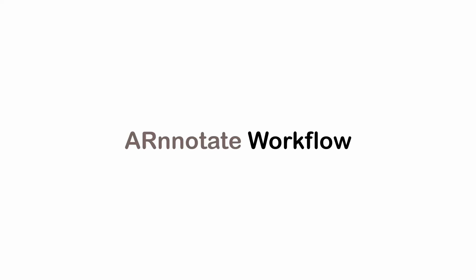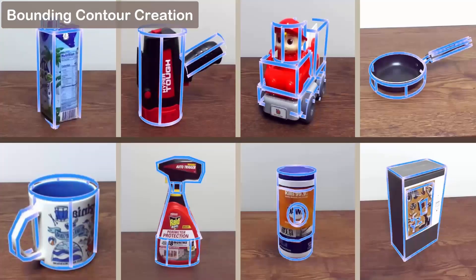Now we explain the workflow of Arnotate. The first step is to create a virtual bounding box of the target physical object. Instead of using a simple cuboid to represent the 3D bounding box, Arnotate enables a user to create a 3D bounding contour that extensively preserves the geometric features of the object in AR.